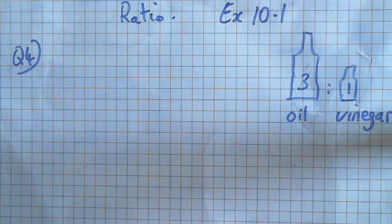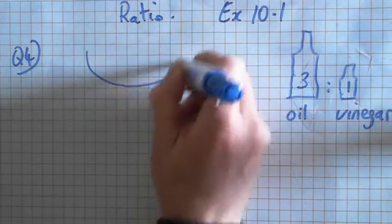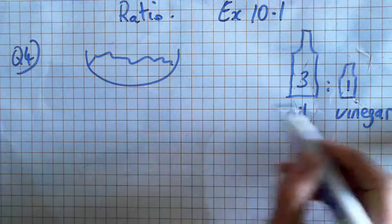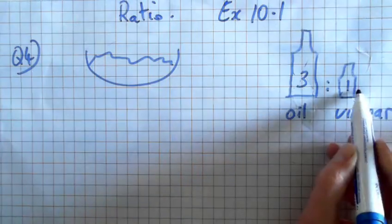Alright, so in a salad dressing, you're making a salad dressing, lots of salad, the ratio of oil to vinegar is 3 to 1.